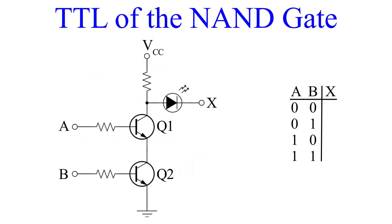We are now at the NAND gate. This looks much like the AND gate — all we have done is move the resistor and LED from the collector of Q2 and place them on the emitter of Q1. Let's apply voltage to VCC. There are no inputs on A and B, so they are both 0. The LED is lit, so the output must be 1. So for inputs A and B both 0, the output is 1.